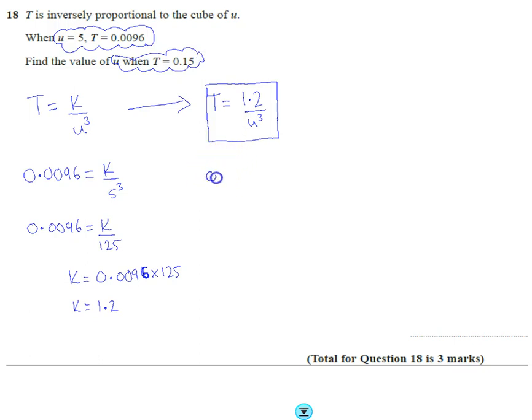So 0.15 equals 1.2 over u cubed. Rearranging, u cubed equals 1.2 divided by 0.15. Using our calculator, u cubed equals 8, therefore u equals 2. That's it, we've finished.